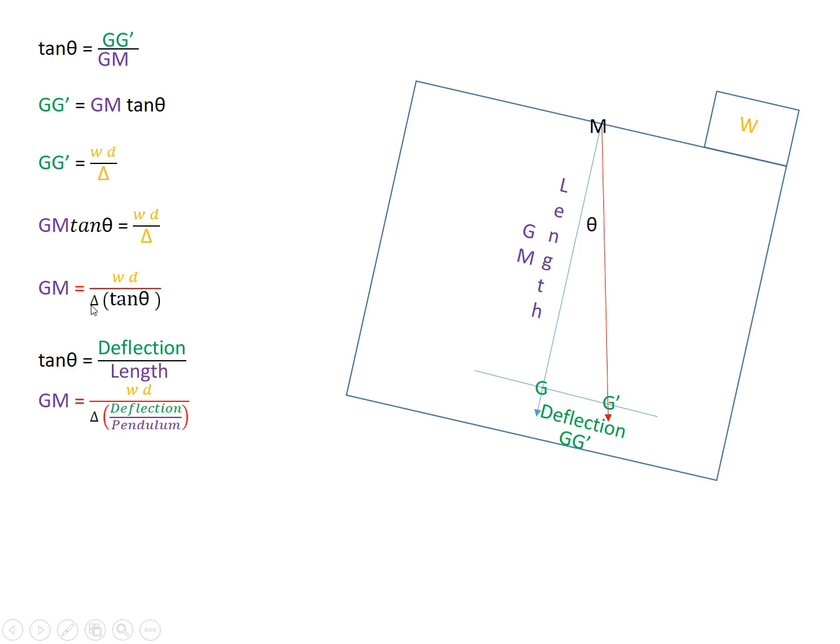GM could also be weight times distance divided by tan theta, or I could just substitute deflection over length in there as well. And typically this form I'll use when I'm doing the inclining experiment, where I'm trying to calculate the KG of a lightship. And this form I'll use typically when I am trying to figure out the GM after shifting a weight. So it's the same basic formula for a couple different methods.